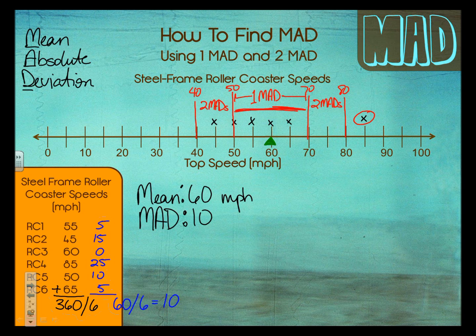We found the average, which was 60. Ten above and 10 below — that's all within one MAD. Go an additional 10 above or an additional 10 below, and now you're talking about two MADs.